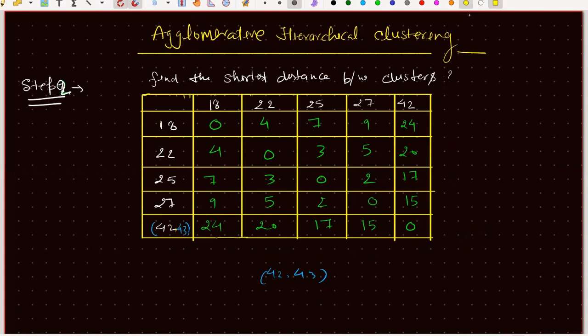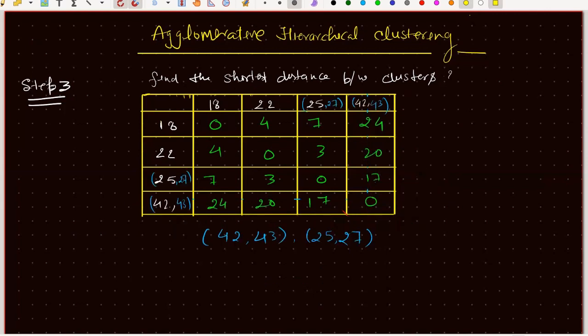Next, we look at the updated matrix and find the next minimum distance, which is 2 — the distance between data points 25 and 27. So we merge 25 and 27 into a new cluster. This merging step is recorded in the dendrogram.